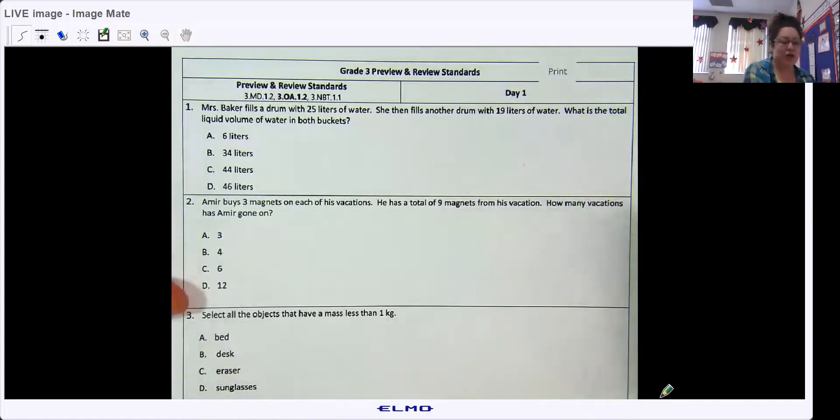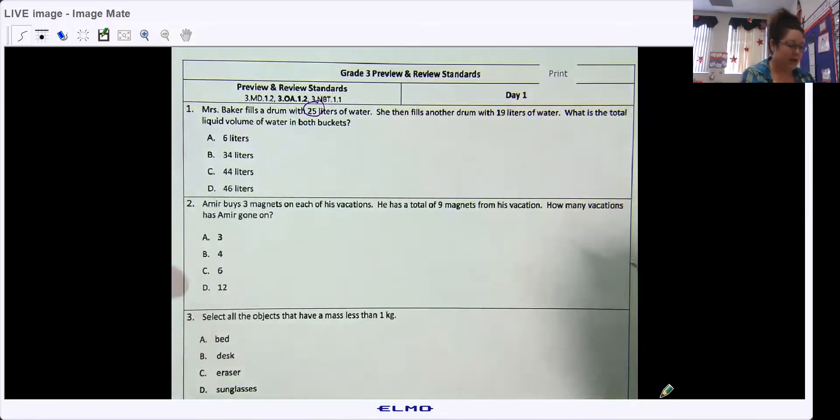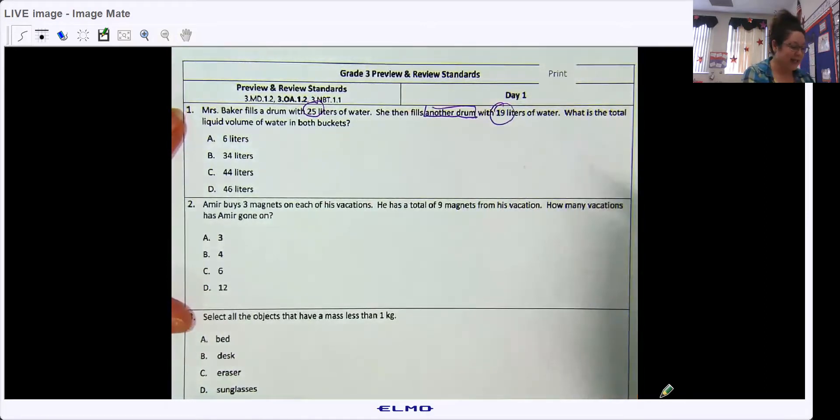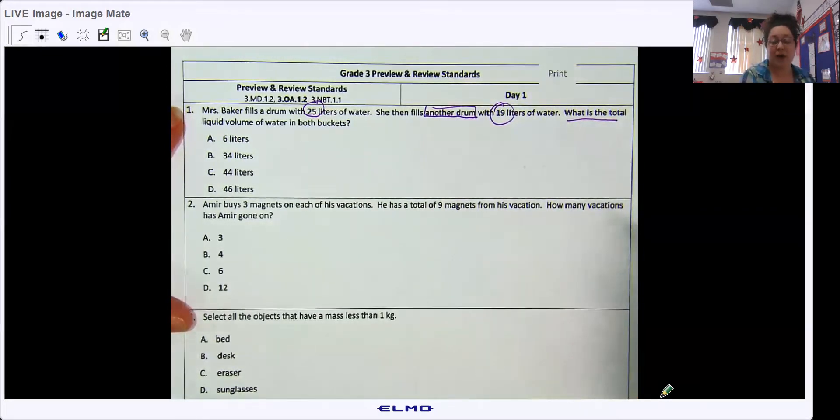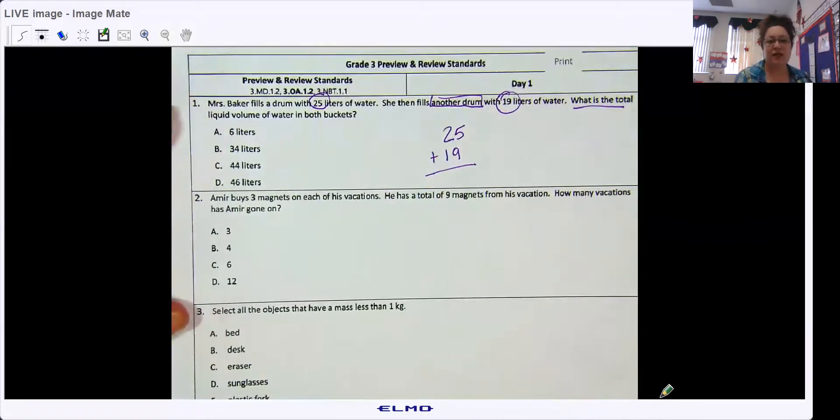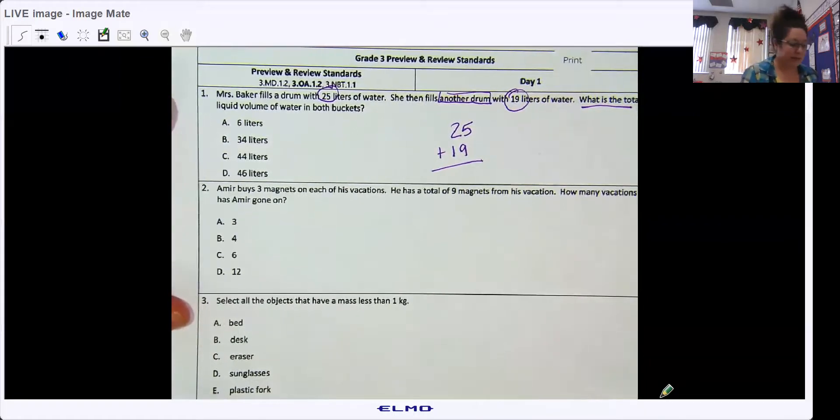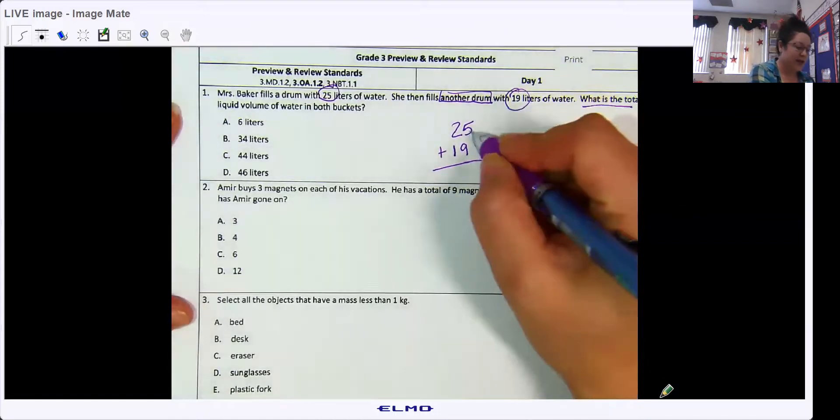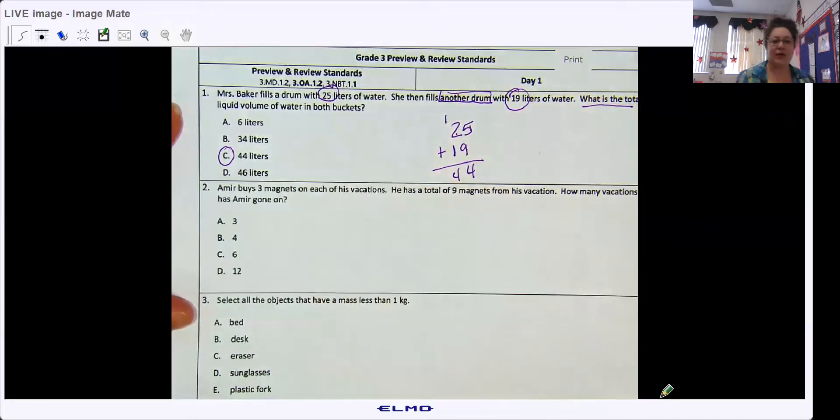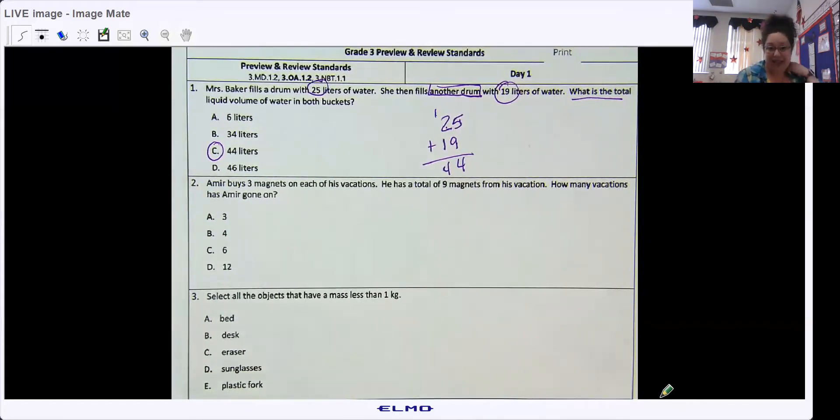Mrs. Baker fills a drum with 25 liters of water. Then she fills another drum, that's our clue, with 19 liters of water. What is the total liquid volume of water in both buckets? The total, the altogether amount. So what are we going to do? We are going to add. Go ahead and solve it. And you should have gotten 44.